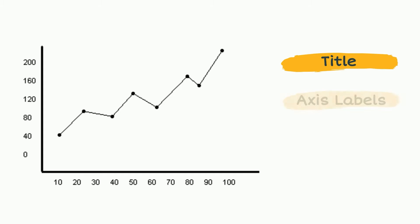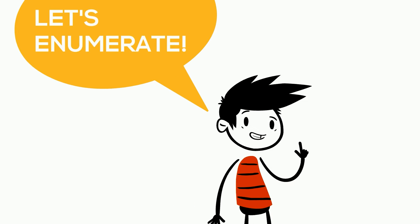Like title, axis labels, and even proper intervals. These are very important elements that should always be present in our graphs. Now, let's enumerate some ways on how we can present our data.